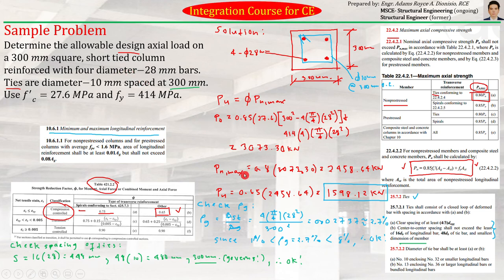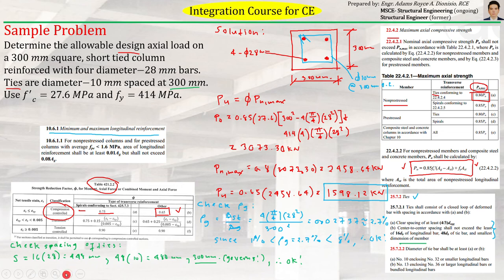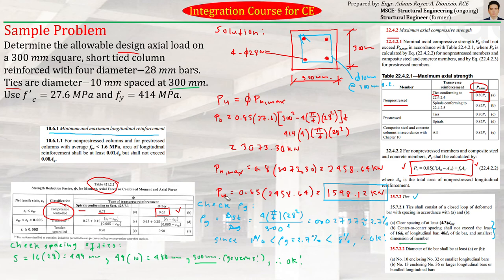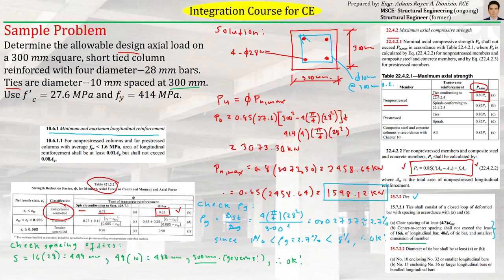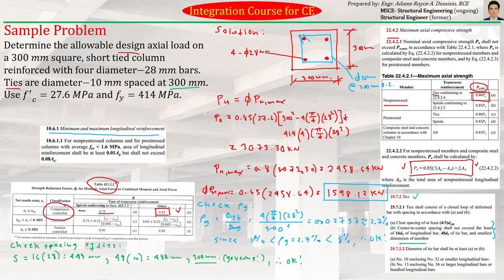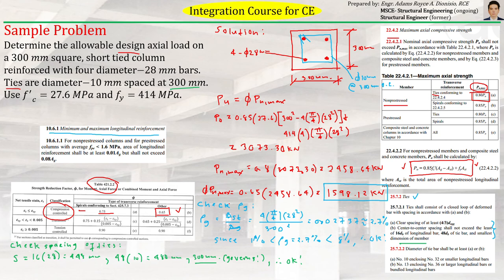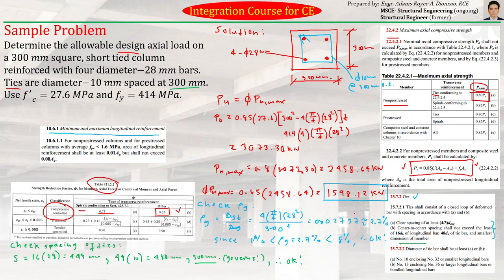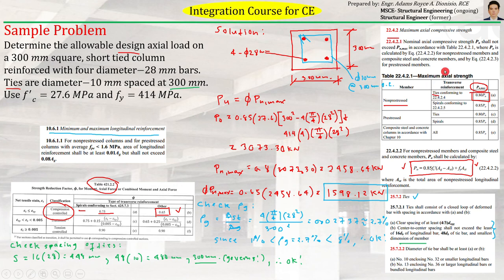So that's just if you want to check the steel ratio and the spacing of the ties. But basically, what's being asked in the question is just the PU, the ultimate, the maximum, or the allowable design action load. Or simply phi PNMAX. So maybe it is more appropriate to call that as phi PNMAX. Because if we use PU, it's more of the demand. So instead of calling this as simply PU, let us just call that as phi PNMAX. So that it will look more like the capacity of the section rather than PU. Because when we say PU, it seems like load or demand. So basically, the answer here will be 1,598.12 kilonewtons. So that's the maximum capacity that this given section can resist.